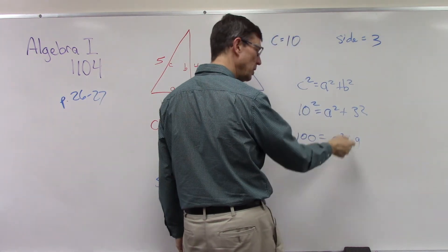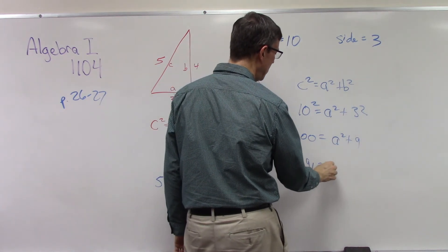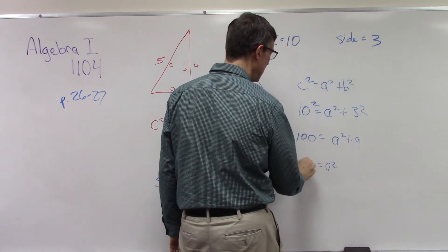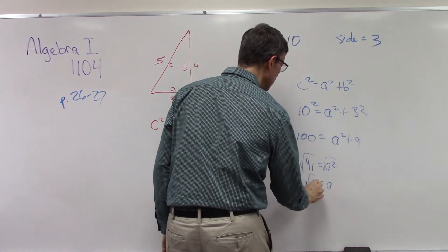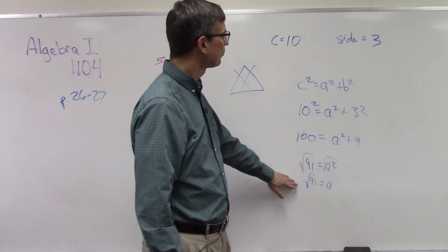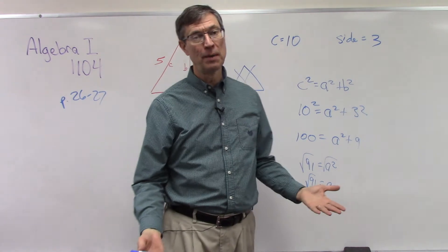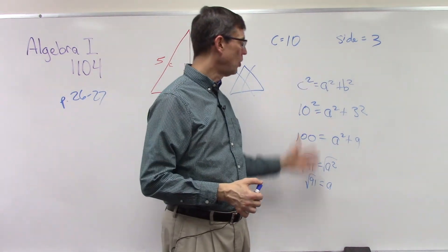So then you subtract 9 from 100 and get 91 is A squared, and then we do the square root of both sides, so A equals the square root of 91. And you can actually just leave the answer like that.